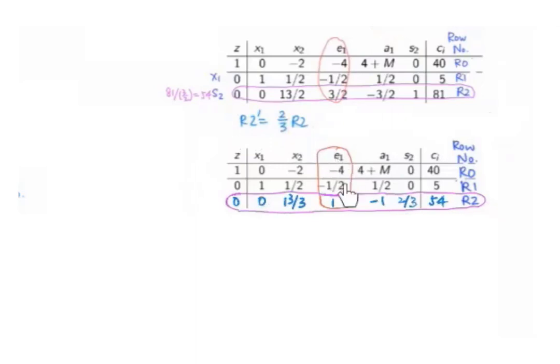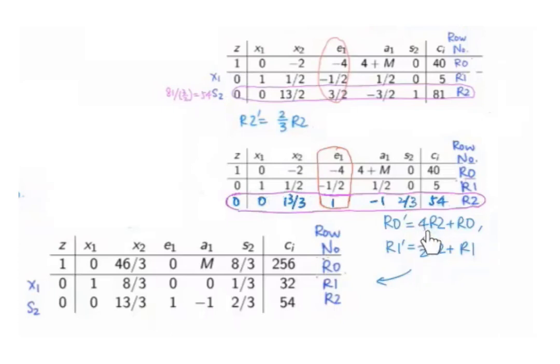Next, we would like to make these two numbers to be 0 and change the corresponding two rows accordingly. First, we multiply 4 times row 2 plus row 0 to get the new row 0 as follows. And we multiply row 2 by 1 over 2 and add it to row 1 to get the new row 1. We shall obtain the following system.